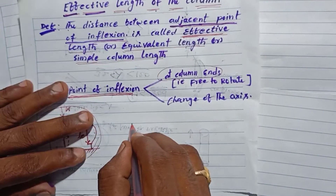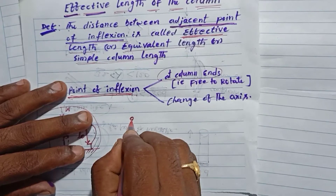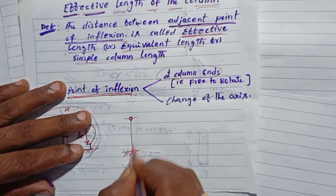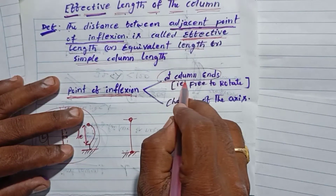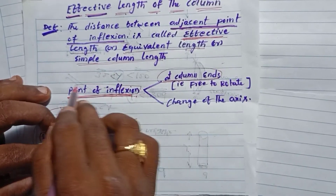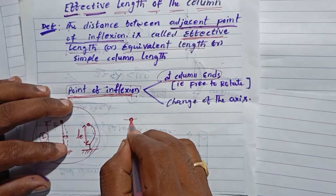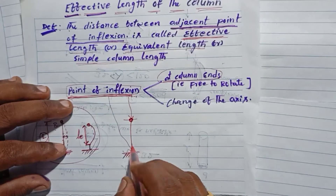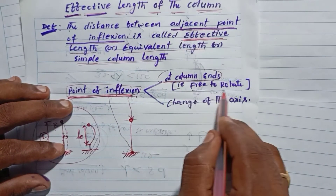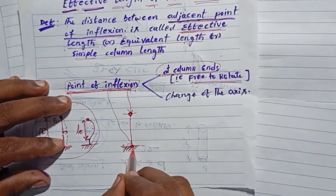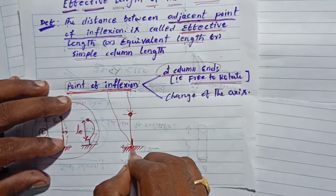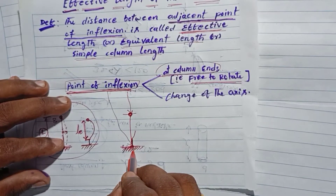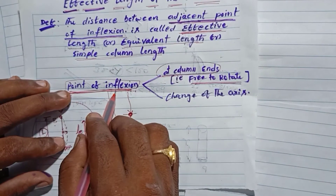At column ends — for example, this is the column. One end is pinned and the other end is fixed. A pin end is a point of inflection because it is free to rotate. But the fixed end is not a point of inflection, because the fixed support does not allow rotation — the column end remains straight, not bending.